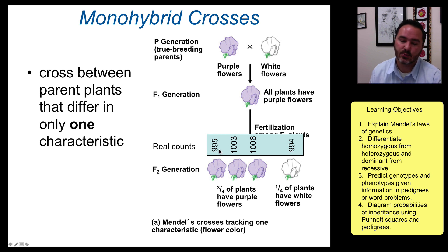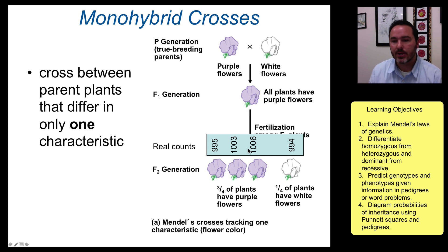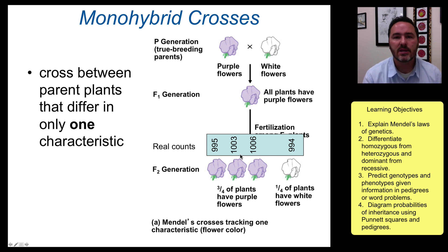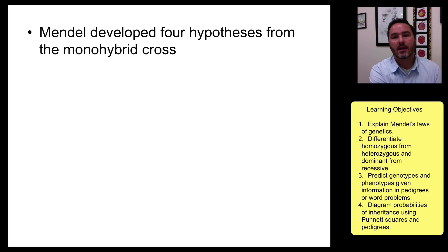You might imagine that his real counts — he wasn't just doing this once, he was doing it multiple times — involved counting thousands and thousands of different characteristics across these pea plants. So maybe it didn't turn out to exactly 3000 to 1000, but it was really, really close and he saw this over and over again. Once you see this, you know that the pattern is telling you that there is some underlying mechanism driving this. And this is what led Mendel to develop four hypotheses.